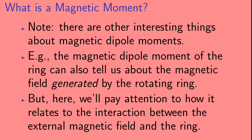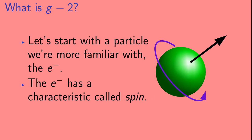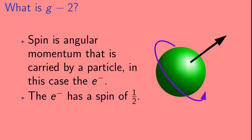We should note that there are other interesting things about magnetic dipole moments. For example, the magnetic dipole moment of the ring can also tell us about the magnetic field generated by the rotating ring. But here we'll just pay attention to how it relates to the interaction between the external magnetic field and the ring. Magnetic dipole moments aren't relevant just to rings of charge — particles can also have magnetic dipole moments. Let's start with a particle we're more familiar with: the electron. The electron has a characteristic called spin. Spin is angular momentum that is carried by a particle, and the electron has a spin of one-half.